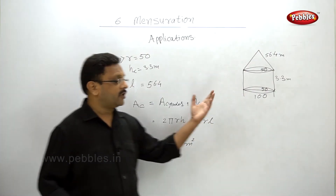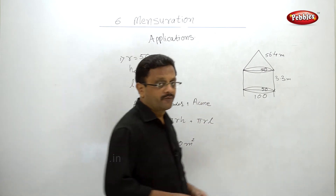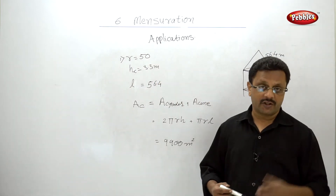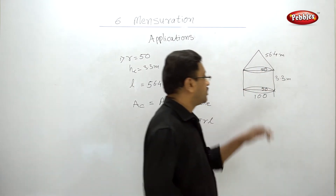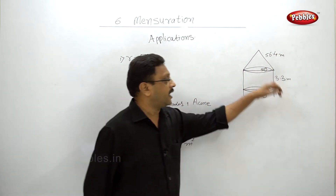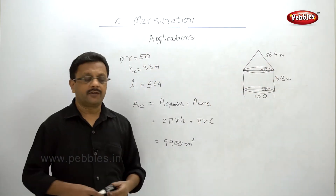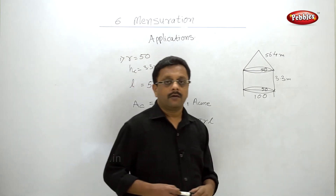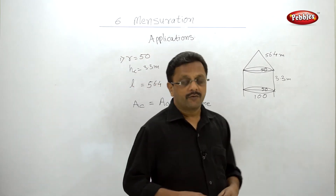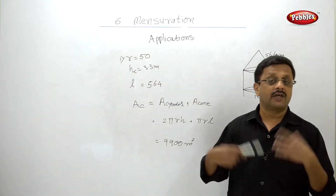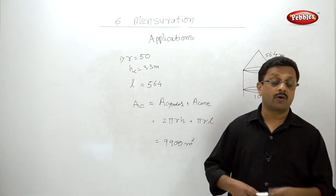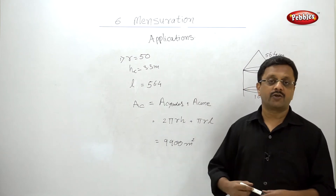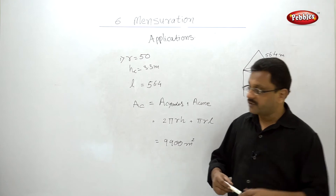Whenever you are given a combination of figures, you have to first identify the different variables — radius, height, slant height — whatever is required to calculate the surface areas, curved surface areas, or volumes as per the combination of the figures.